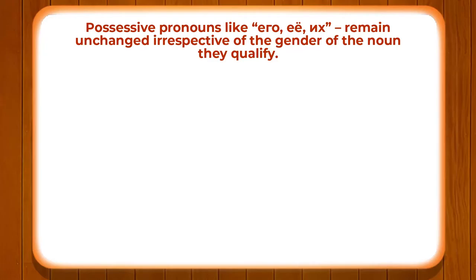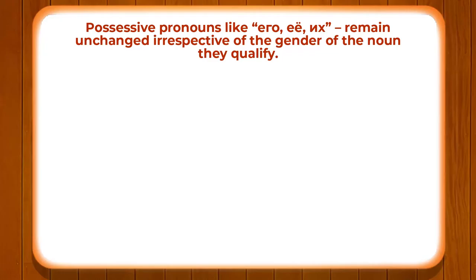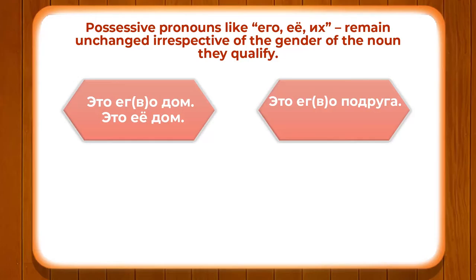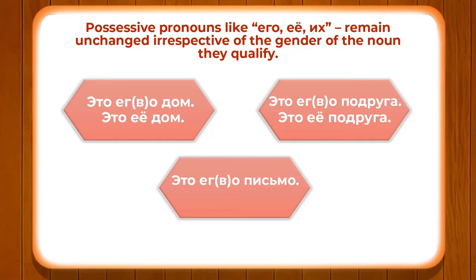Now we will discuss certain possessive pronouns like YIVO, IYO, and IKH, which remain unchanged irrespective of the gender of the noun they qualify. For example, ETA YIVO DOM — this is his house. ETA IYO DOM — this is her house. Notice that for the letter G, a de-voicing occurs and the sound V comes instead.